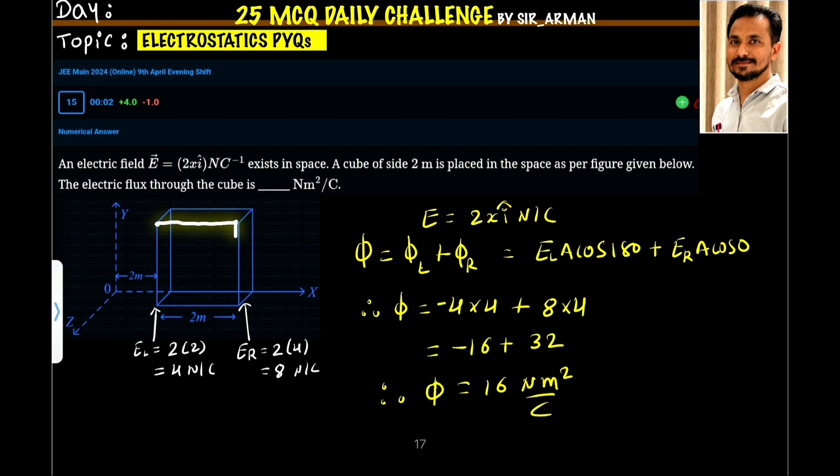Again, there is no flux from the surface or face which is facing outside towards us, and also there will be no electric flux through the surface which is on the other side of the cube. This means there will be electric flux only through two surfaces: left and right.